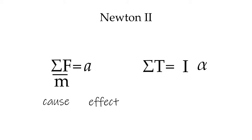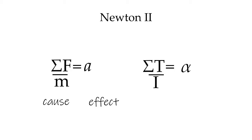Once again, our cause and effect are in a scrambled order. We do not have an effective torque because we have an acceleration — we have an angular acceleration because we have an effective torque. So if we rearrange the terms of our equation, we can now see the cause and the effect. A larger torque for a given moment of inertia will lead to a larger angular acceleration. We would also need a larger effective torque if we have a larger moment of inertia for any given angular acceleration.